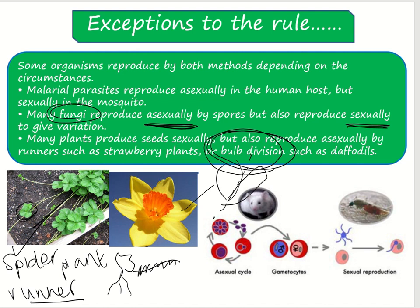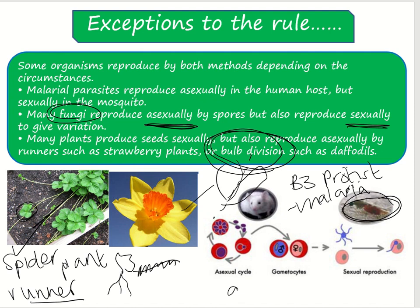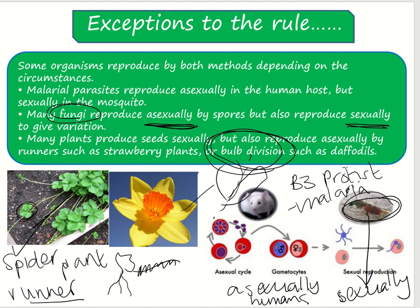Another example is the protist encountered in B3, which causes malaria — a disease that affects people, passed on by a mosquito vector. When a human has malaria, the malarial parasite reproduces asexually inside the human host. But when malaria is within the mosquito, it reproduces sexually, producing variation. So the malarial parasite can also do both types of reproduction depending on its host.